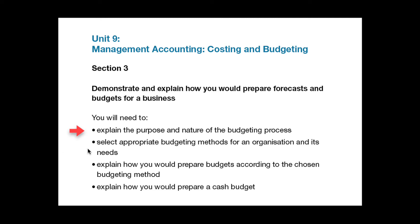For bullet point 2, ideally using the whole or part of your own organisation or one that you can research, very briefly describe different budgeting methods such as incremental, zero based or programme, and select and justify one of these.